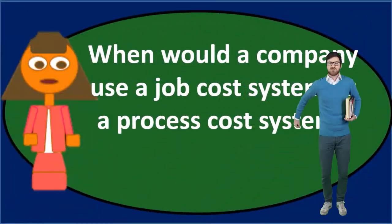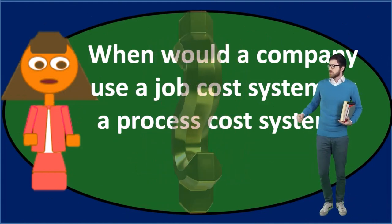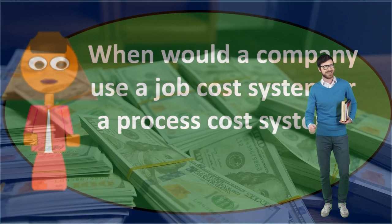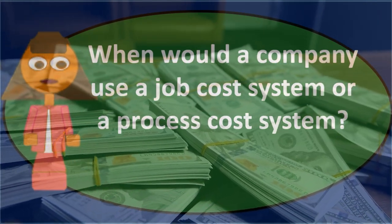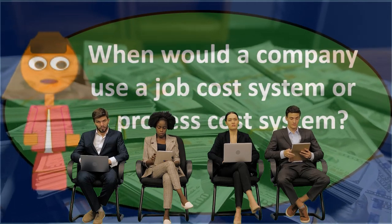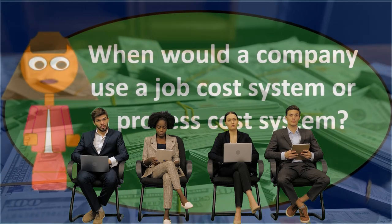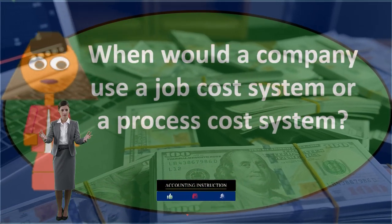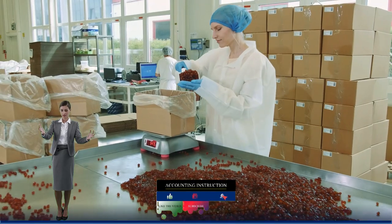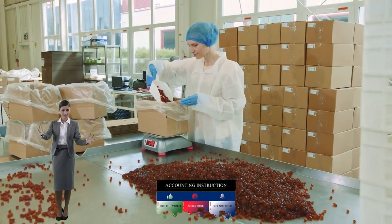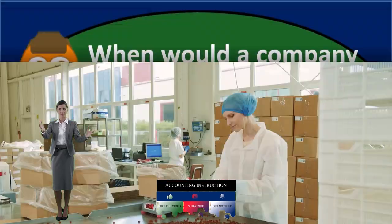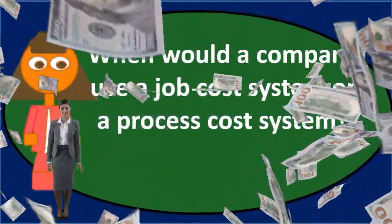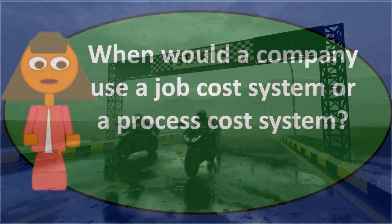If our goal is to make things different in nature, it's going to be more expensive, because the whole point is to have something unique and customized. So typically in a job cost system, inventory items cost more. In a process cost system, the goal is to make items exactly the same and put in a process that makes production as cheap and efficient as possible, allowing us to maximize output of identical units at lower cost.